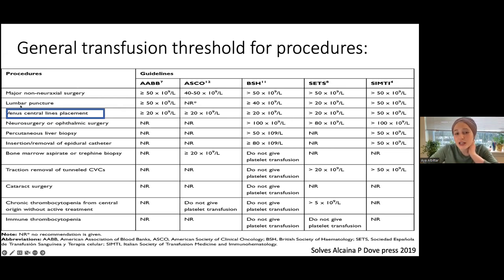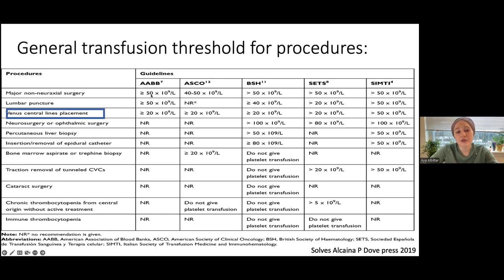Lumbar puncture has a higher threshold of 50. Non-neurosurgical procedures are above 50. Neurosurgical procedures are typically determined by the neurosurgeon's preference. There are no specific recommendations for immune thrombocytopenia specifically.